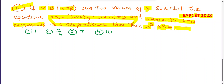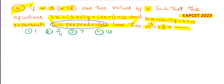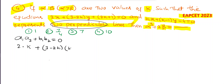Fourth question from Straight Lines TS MSet 2023: α > β are two values of k such that the lines 2x + (3 - 2k)y + 2k + 1 = 0 and kx + (k-1)y - 4 = 0 are perpendicular. For perpendicular lines, a1·a2 + b1·b2 = 0, where a1, a2 are x-coefficients and b1, b2 are y-coefficients. So 2·k + (3 - 2k)(k - 1) = 0.